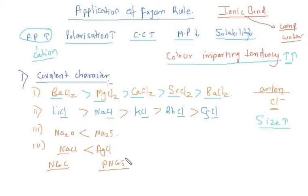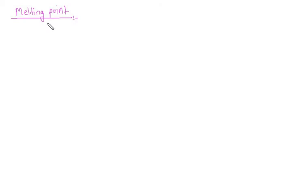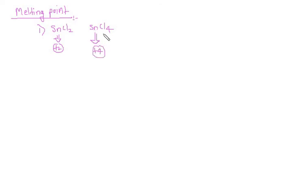Now we move to the second property: melting point. We know ionic compounds have higher melting points, and if ionic character decreases, the melting point also decreases. First example: SnCl₂ vs SnCl₄. In SnCl₂, tin is in the +2 oxidation state; in SnCl₄, tin is in the +4 oxidation state. The covalent character is more in SnCl₄, so its melting point is less. In fact, SnCl₂ exists in the solid state whereas SnCl₄ exists in the liquid state.